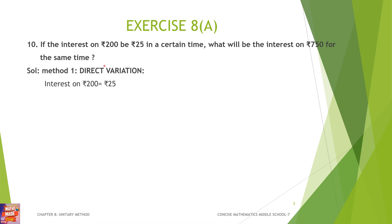Let's write the first given data here. If the interest on Rs. 200 — I'm considering it as principal — we already learned the simple interest problem. If you missed it, you can check it out in my playlist. I have solved all the problems in different models. So, 200 is the principal and Rs. 25 is the interest. Interest on Rs. 200 is 25.